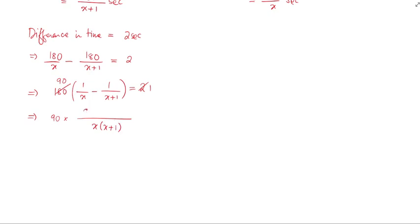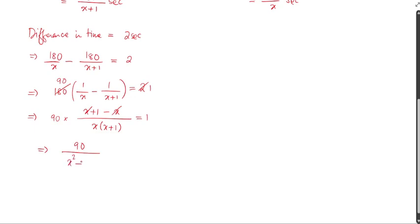Taking the LCM as x into x plus 1, in the numerator we get x plus 1 minus x, which simplifies to 1. So we have 90 divided by the denominator x squared plus x, which equals 1. Cross-multiplying gives x squared plus x equals 90.